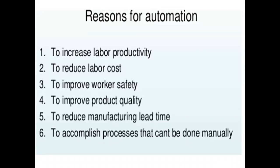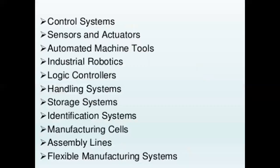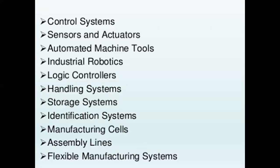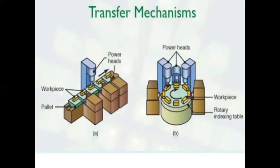Automation systems include control systems, sensors and actuators, automated machine tools, industrial robotics, logic controllers, handling systems, storage systems, identification systems, manufacturing cells, assembly lines, and flexible manufacturing systems. These are the key reasons why automation is adopted in industries.